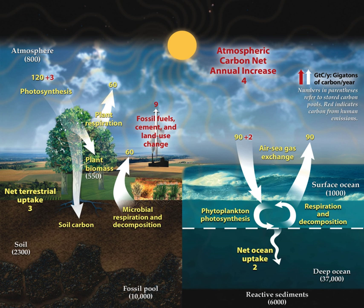The solubility pump is primarily a function of differential CO2 solubility in seawater and the thermohaline circulation, while the biological pump is the sum of a series of biological processes that transport carbon from the surface euphotic zone to the ocean's interior. A small fraction of the organic carbon transported by the biological pump to the seafloor is buried in anoxic conditions under sediments and ultimately forms fossil fuels such as oil and natural gas. The calcium carbonate from which coral skeletons are made is just over 60% carbon dioxide.